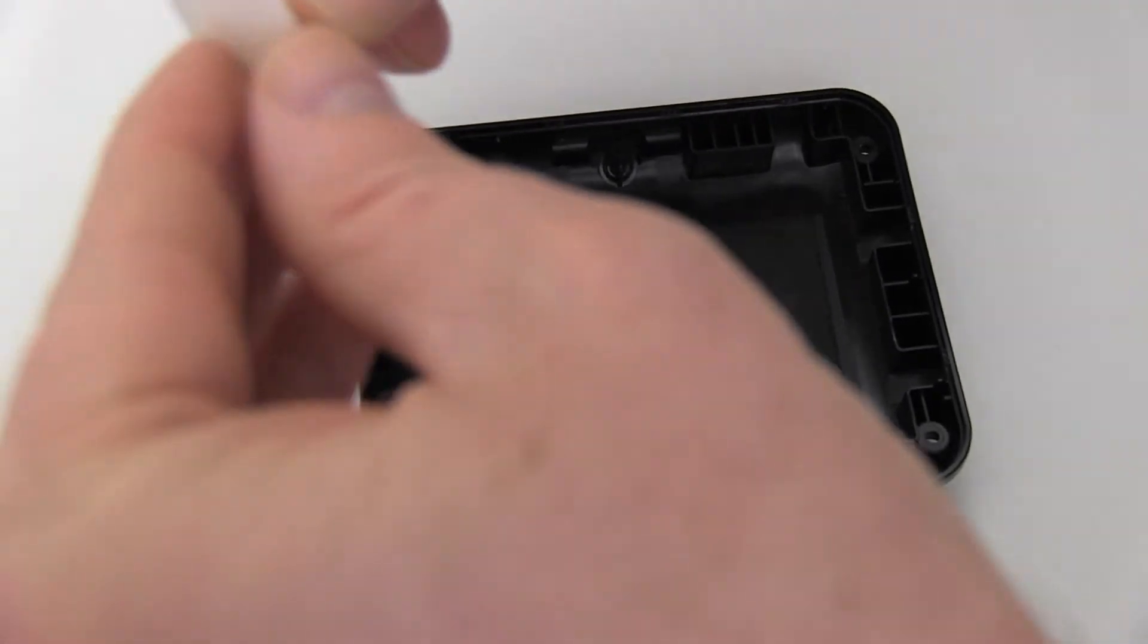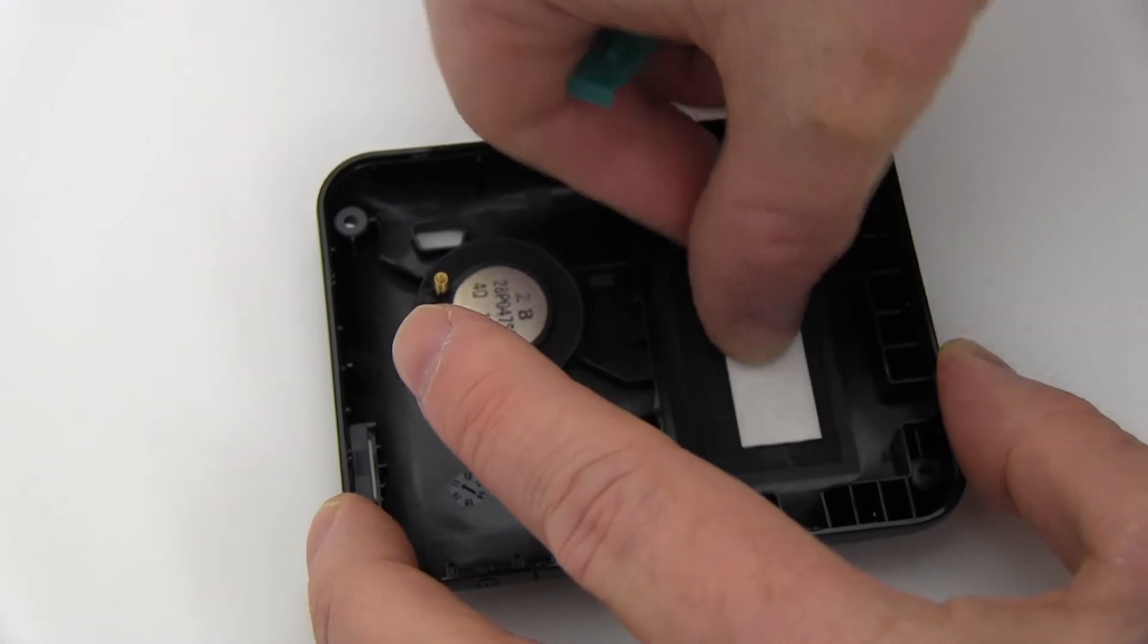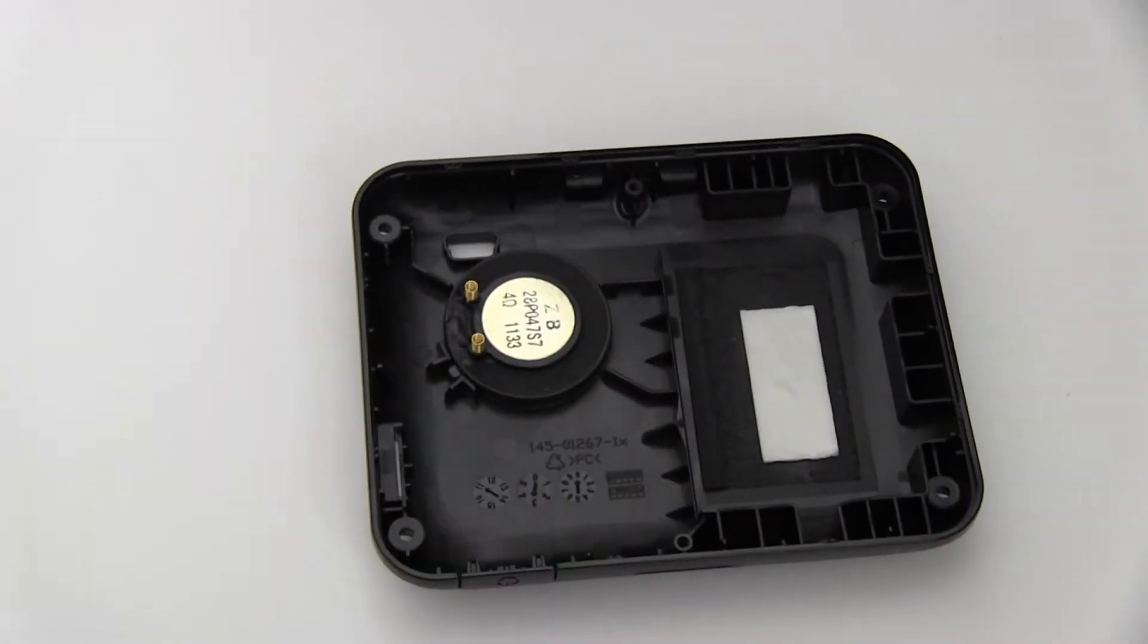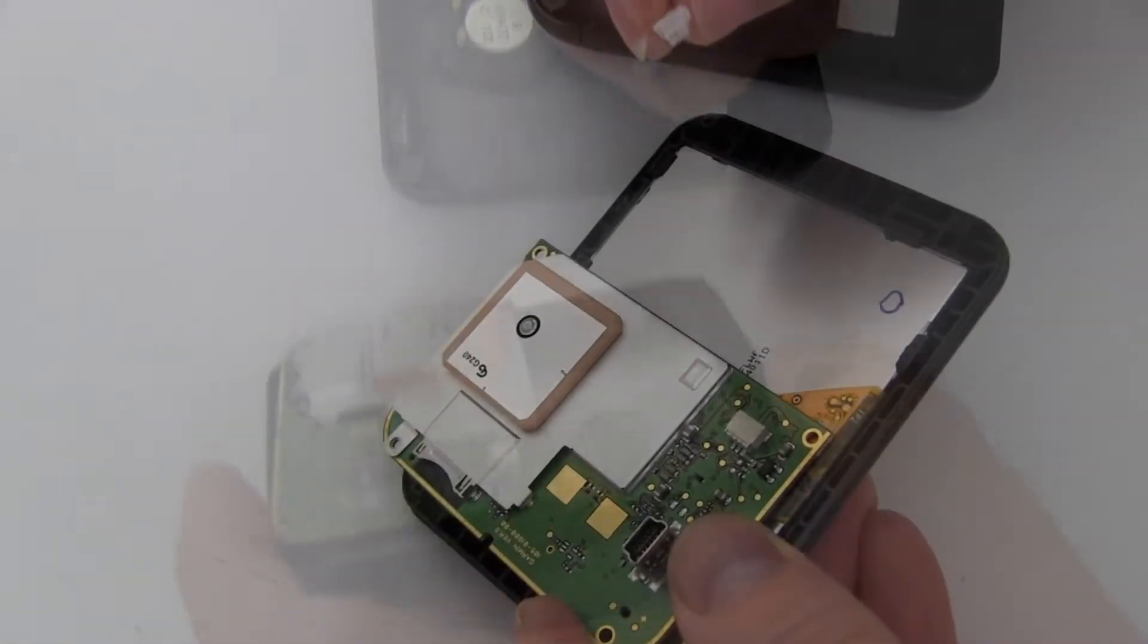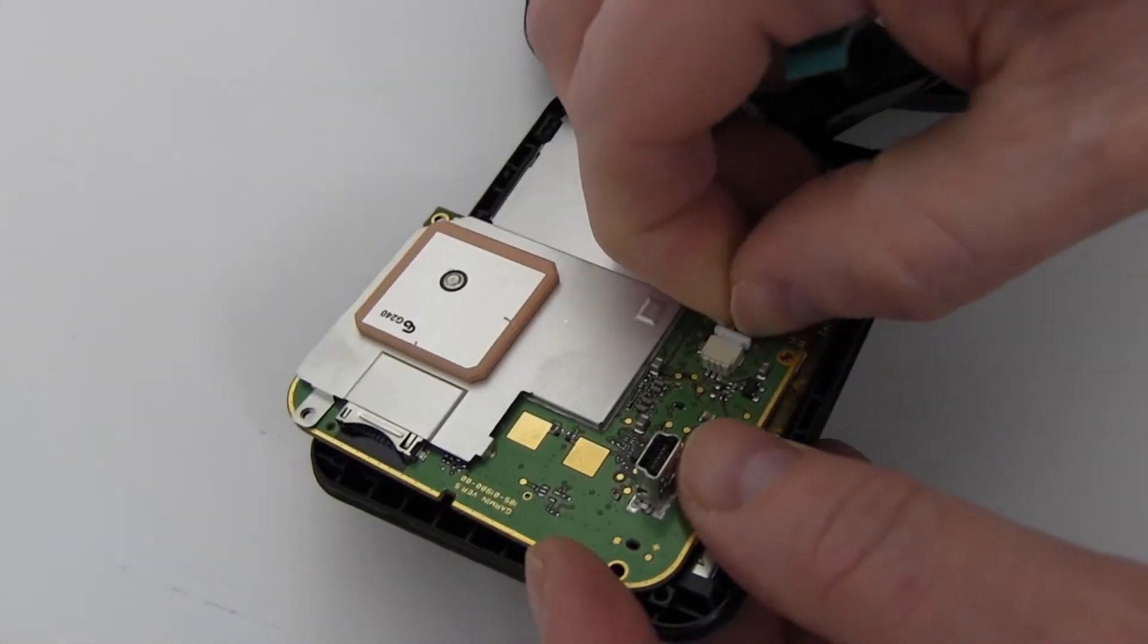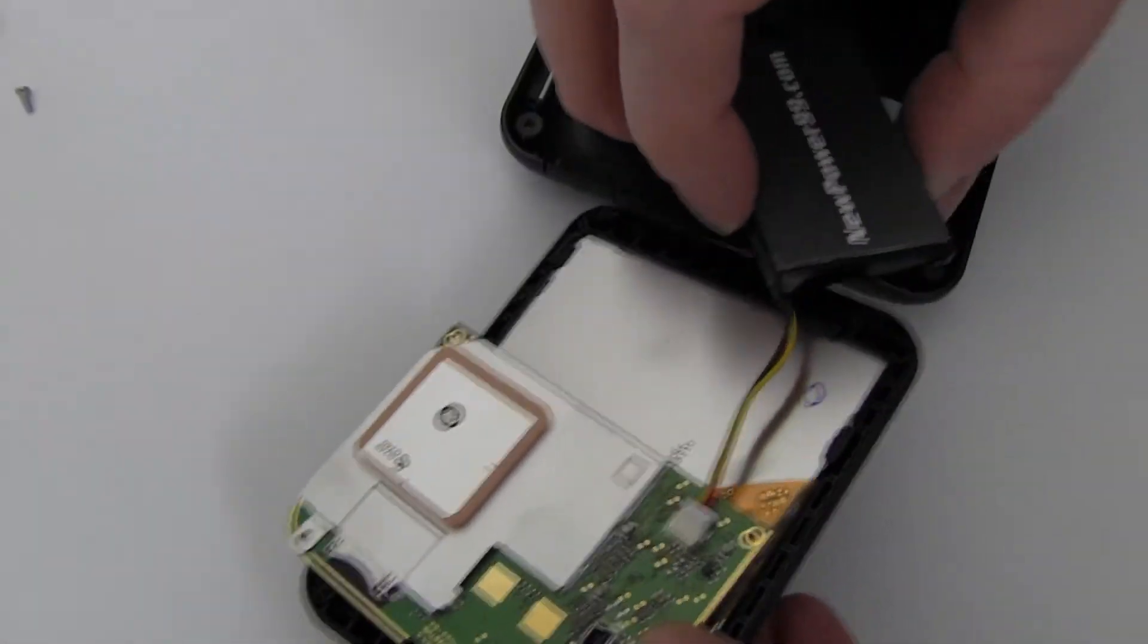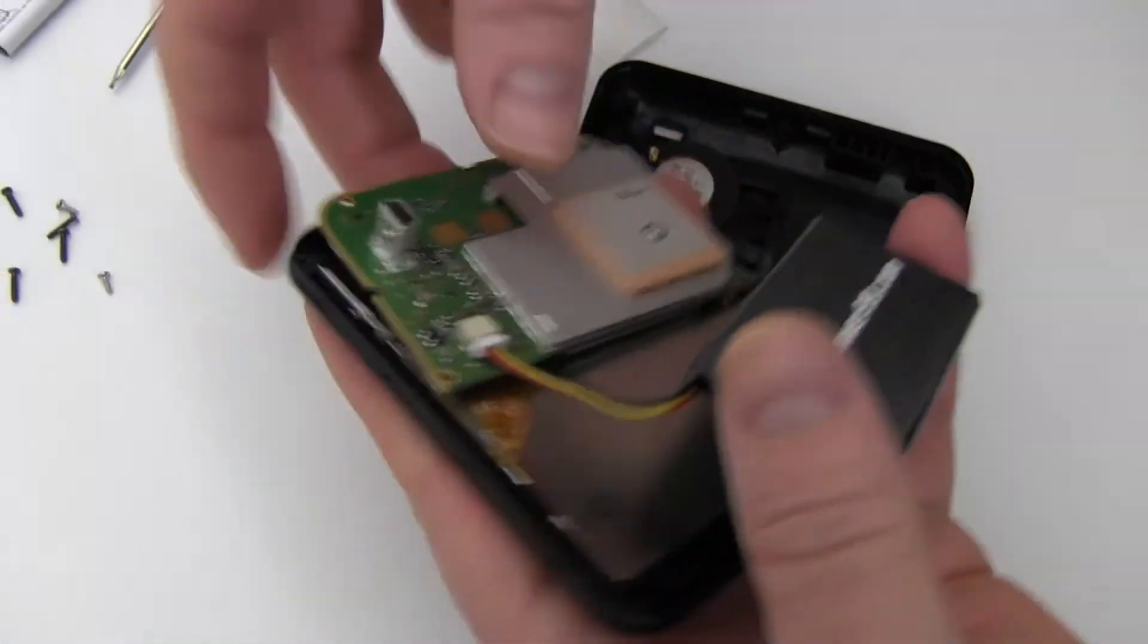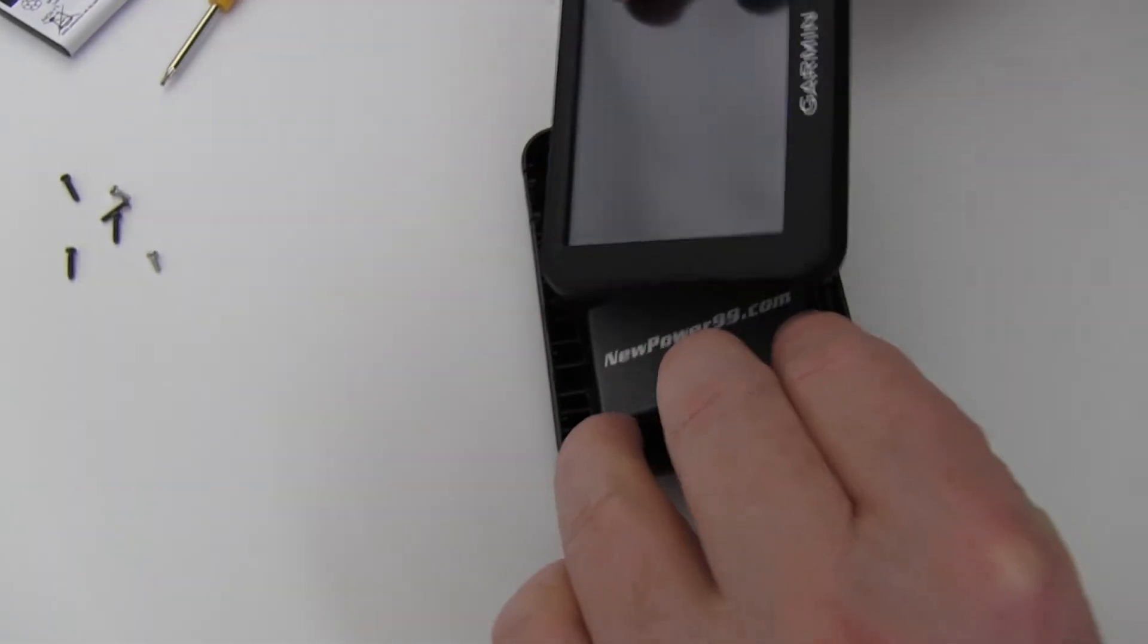Place a strip of double-sided tape into the battery compartment. Connect your new extended life battery from NewPower99.com. Place your new battery into your Garmin.